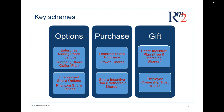Looking at the options box first. An option is a promise to buy shares in the future at a price fixed today. Options don't give employees any shareholder rights until participants exercise their option and buy the shares. The price at which they buy the shares and the timing is generally fixed at the outset. There can be some flexibility on what type of plan you use when going with share options.